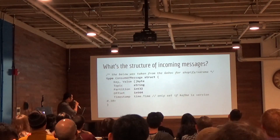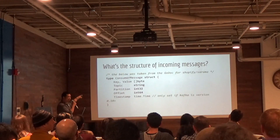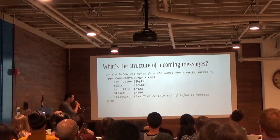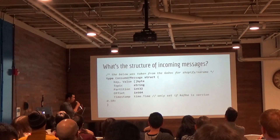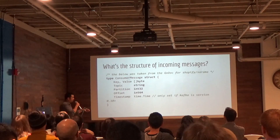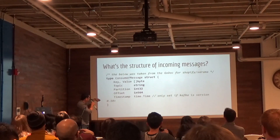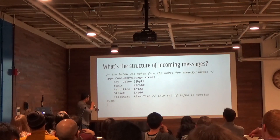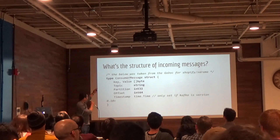What's the struct of a Kafka message? Since I mentioned earlier that you're not guaranteed to receive messages in the same order they were put into a topic, you do have offset and timestamps to look at. You can also recover the topic it was retrieved from, and also the message content itself in the value field.